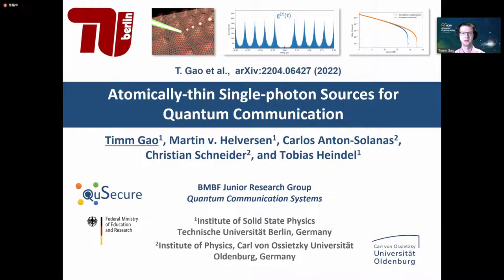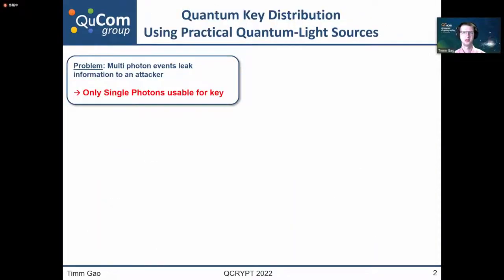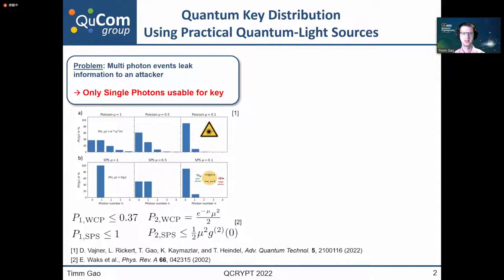The motivation for using practical quantum light sources in QKD is the following. So the problem is, multi-photon events can leak information to an attacker. So only single photons are a usable resource for secret key generation. However, if we are looking at attenuated pulsed laser systems, those are governed by Poisson photon statistics, which means that there is a significant fraction of either zero photons or multi-photons, depending on the mean photon number. Single photon sources, however, can in principle reach a unity efficiency with a residual amount of multi-photon events as given by this upper bound here.